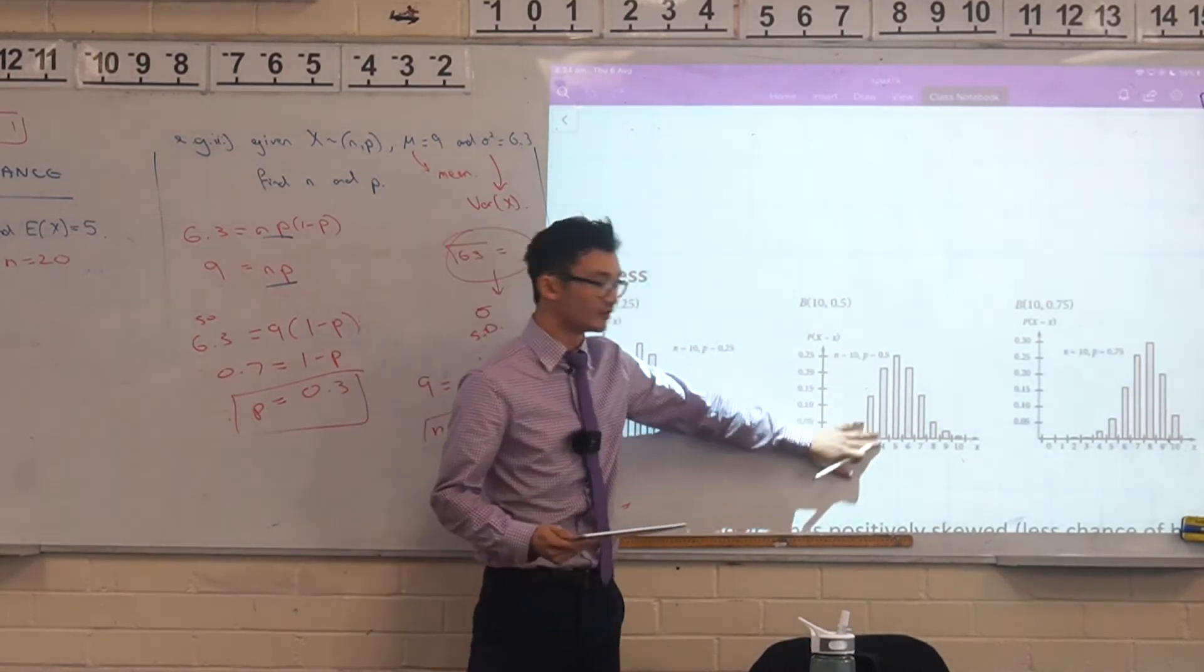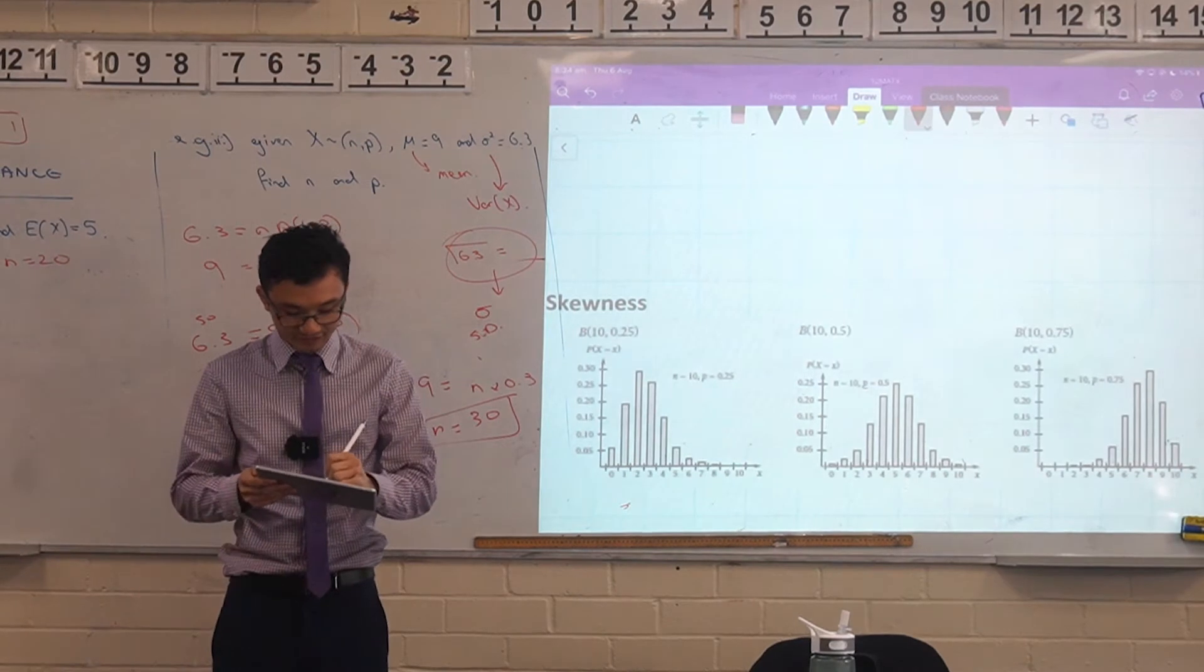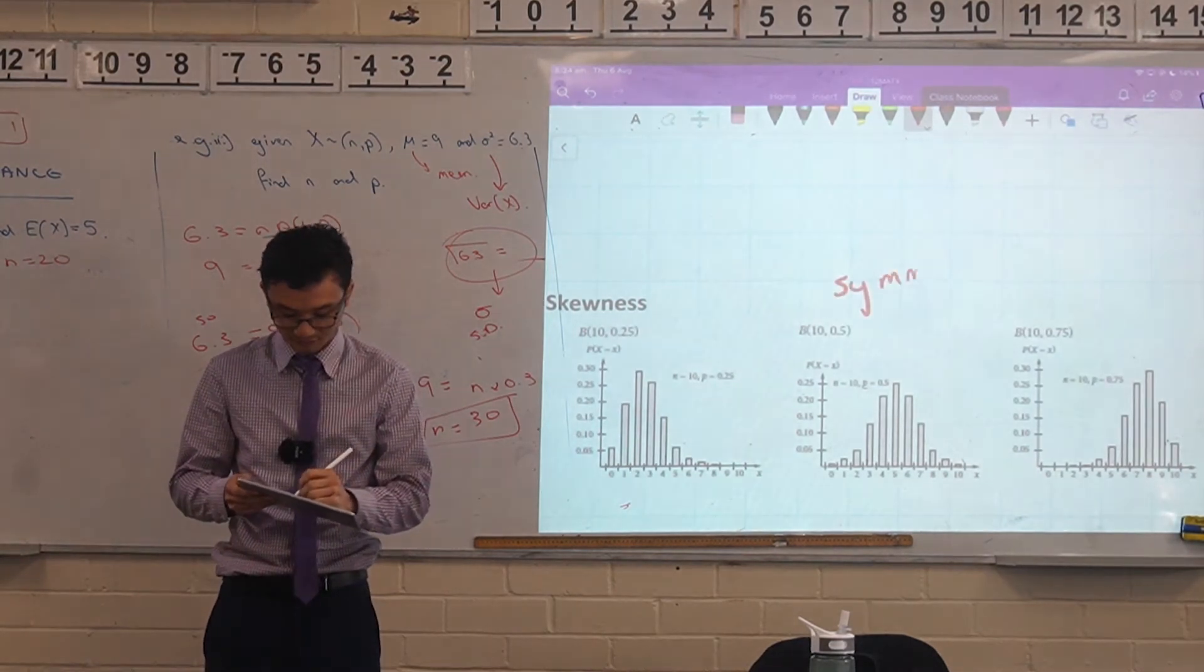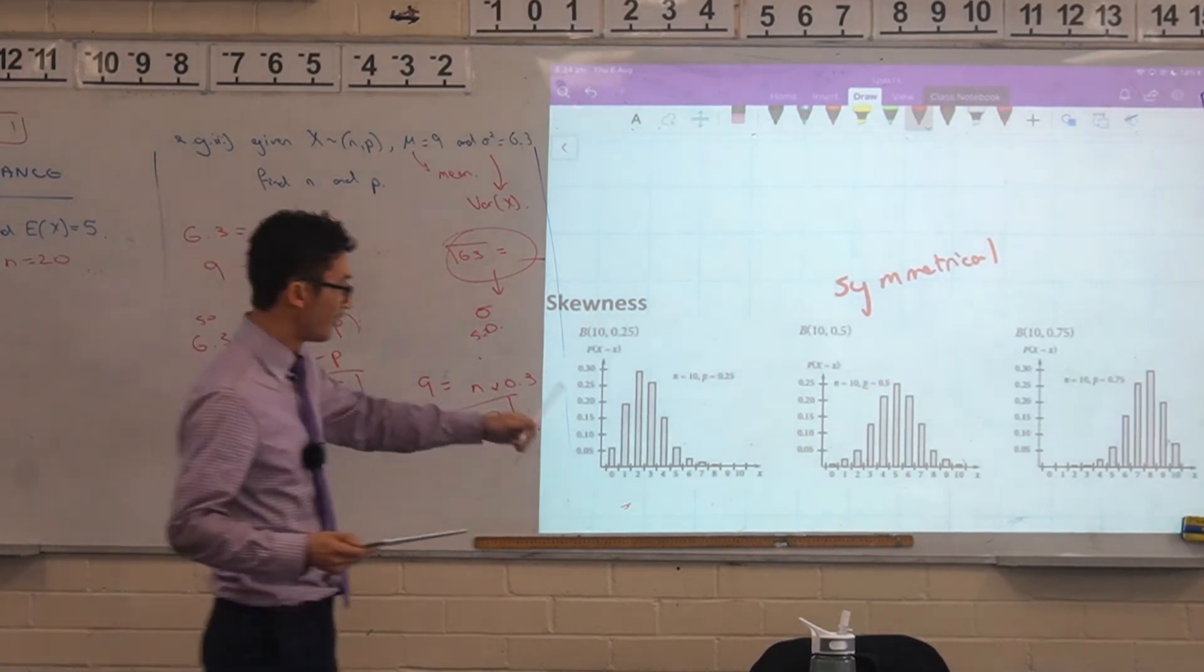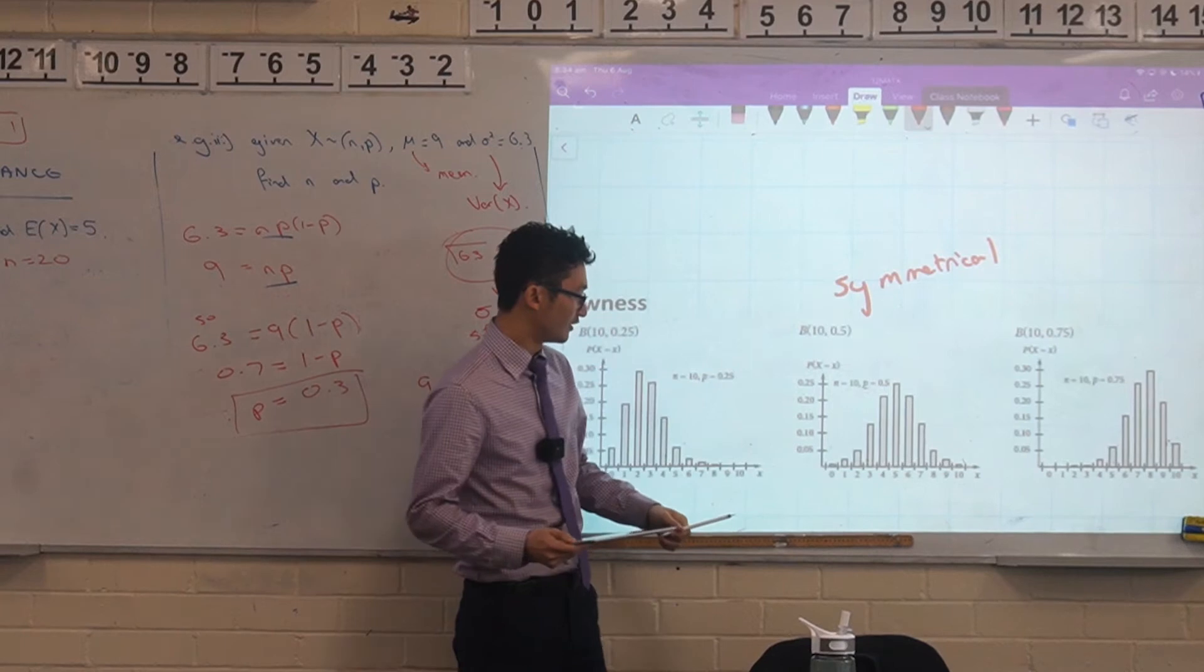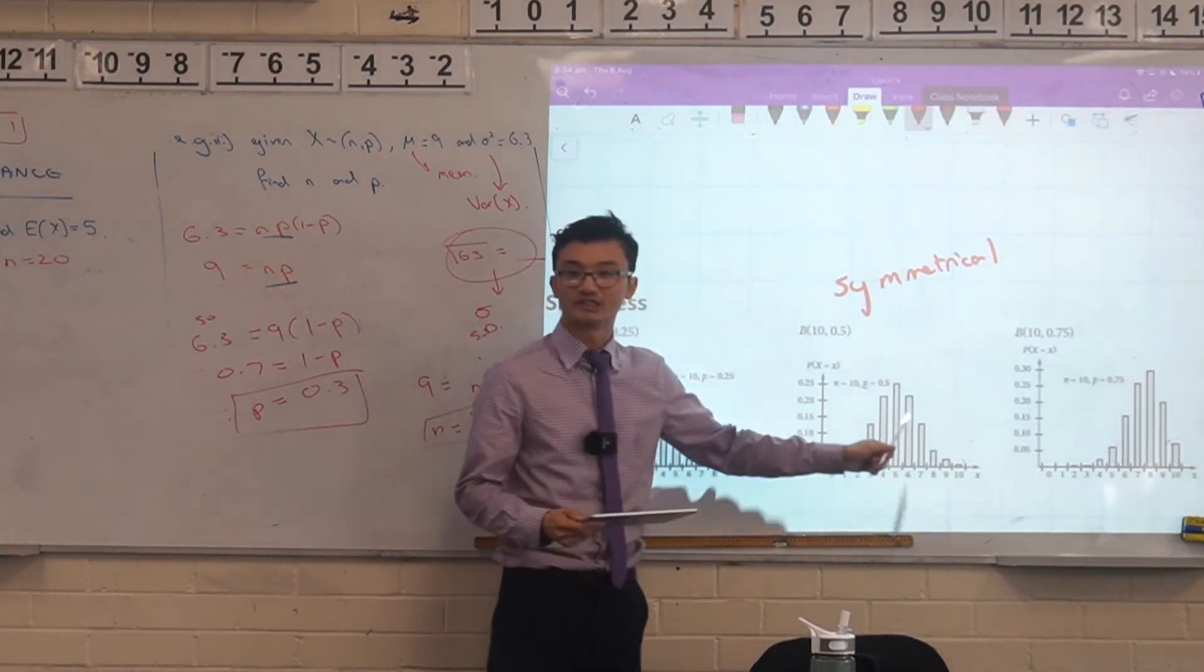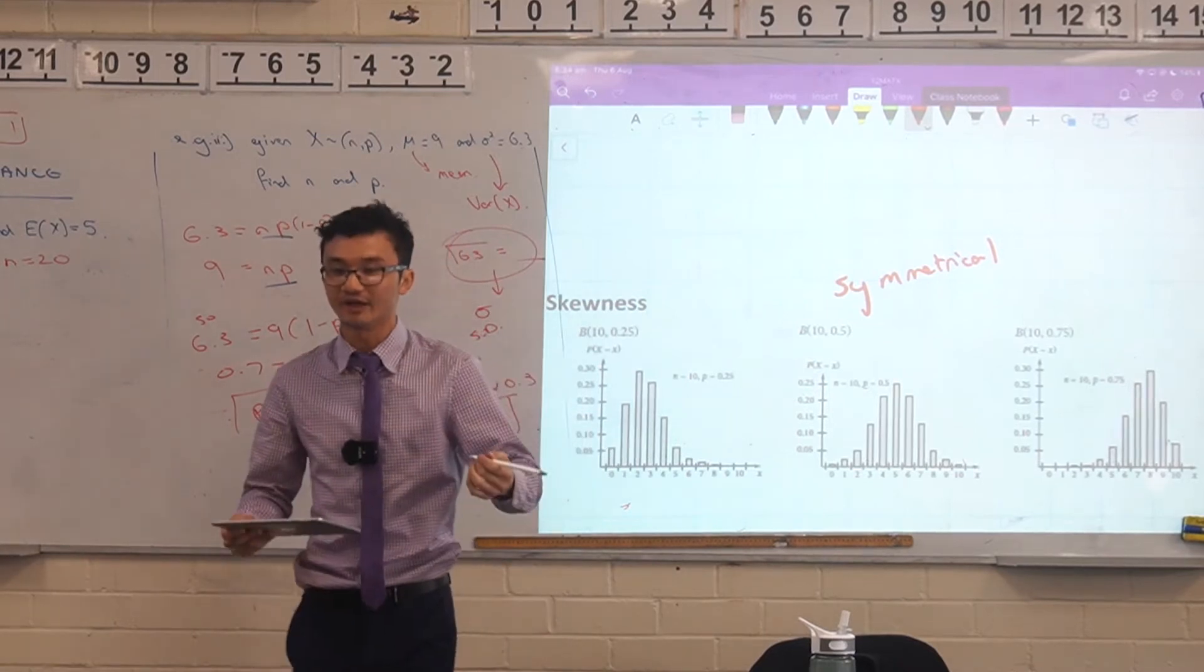Let's just go to where it's 0.5. When it's 0.5, we say it's symmetrical, right? And why is that? Think about heads and tails. If you're doing this 10 times, how many would you expect? You'd expect five heads, right? Because that's half of them. So that makes sense.